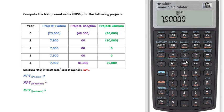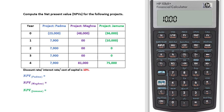Now enter the interest rate or discount rate — the cost of capital. Then press the orange Shift and the NPV button. Our NPV is $2,041.94. This is the NPV of Project A.